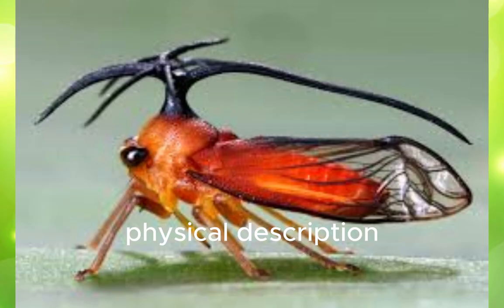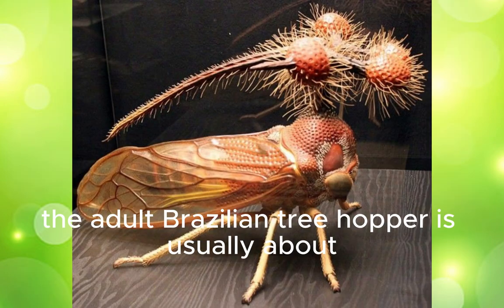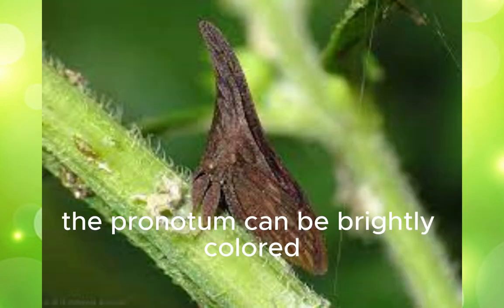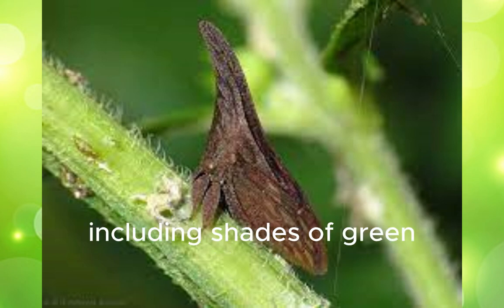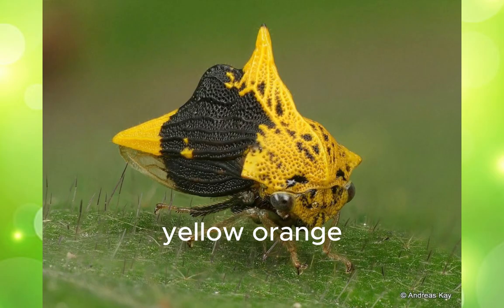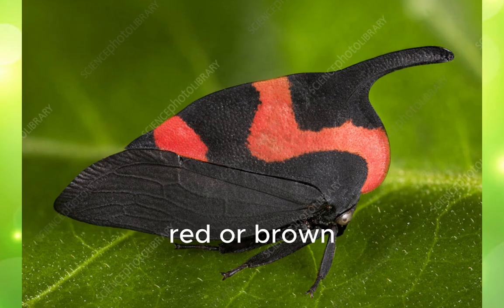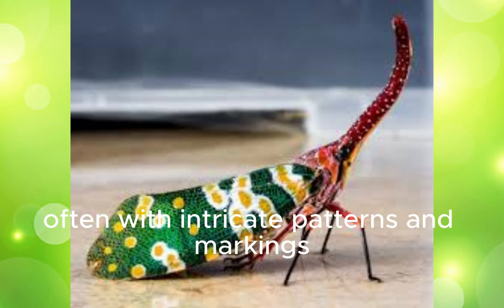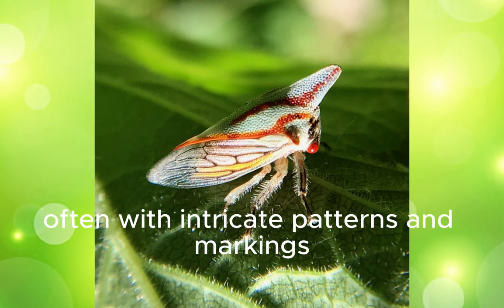Physical description. The adult Brazilian treehopper is usually about 6 to 9 millimeters in length. The pronotum can be brightly colored, including shades of green, yellow, orange, red, or brown, often with intricate patterns and markings.